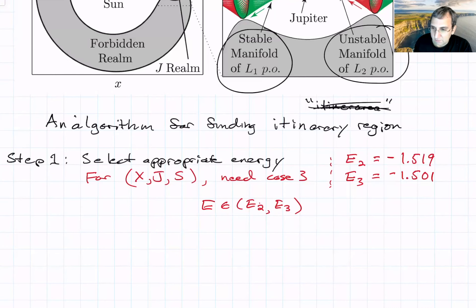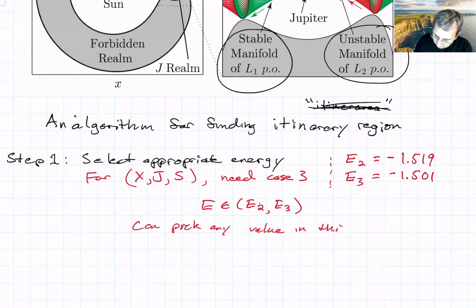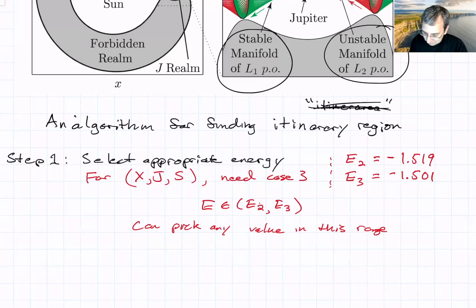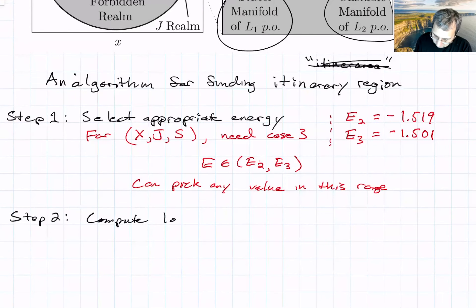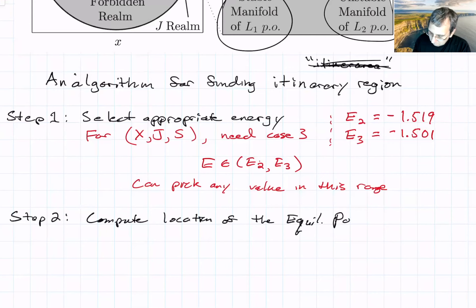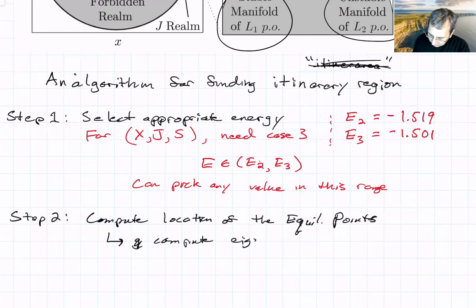We can pick any value in this range. Step two is computing the location of the equilibrium points, which we spent a lecture on, for L1 and L2. From that we can also compute the eigenvalues and eigenvectors for estimating a small Lyapunov orbit.